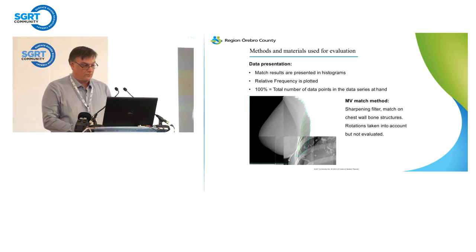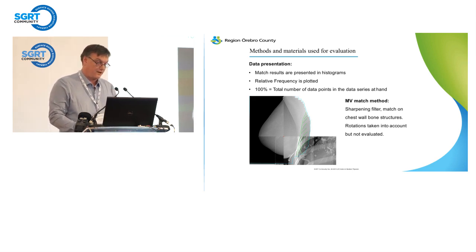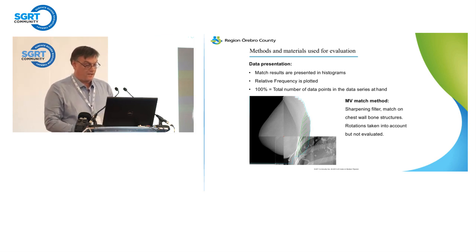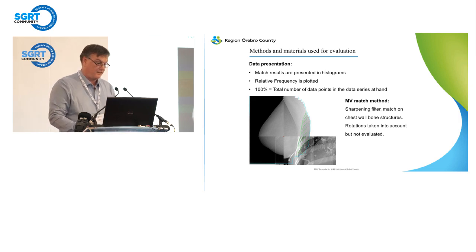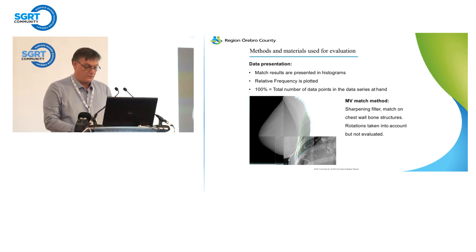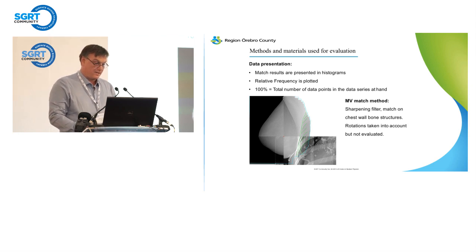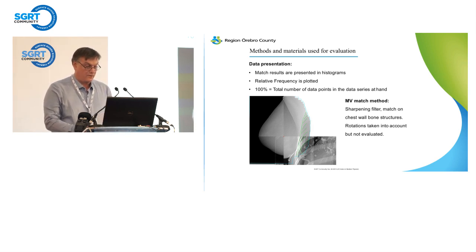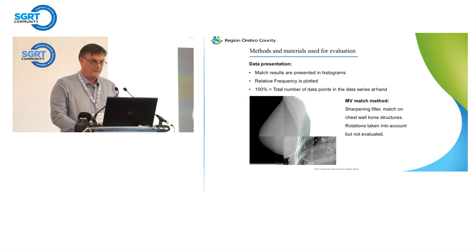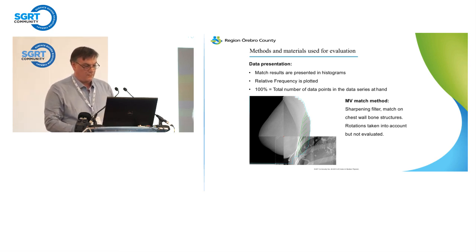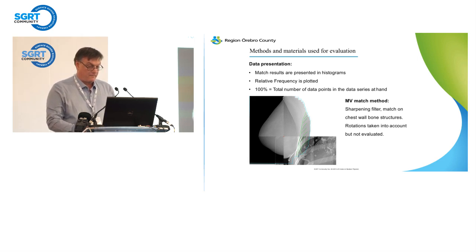The data will be presented in histograms plotted as relative frequency, relative to the total number of data points in each data series. Regarding image matching: we had a sharpening filter on the images and did matching on the chest wall bone structures visible in the megavoltage images. When we did these matchings, we also did rotations of the images, but we haven't evaluated those rotations — in the evaluation we have only been looking at translational motions.